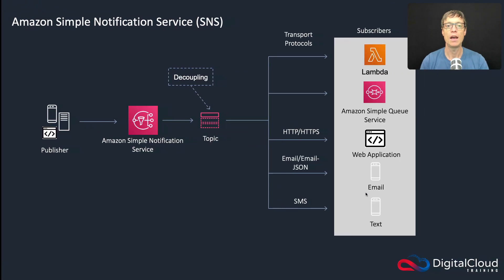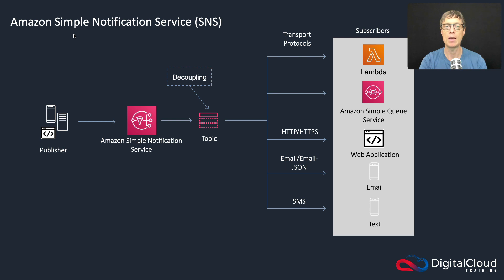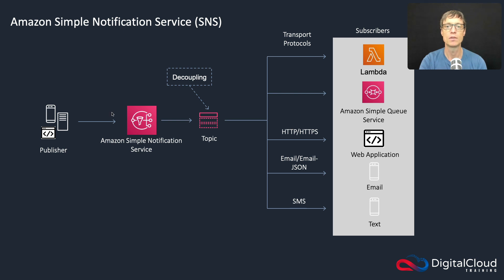Let's head over to the slides. Amazon SNS uses a publisher-subscriber model: a publisher sends a notification and a subscriber receives those notifications. This is a method of decoupling — your publisher can be one application, your subscriber another, and SNS sits in the middle sending information between those components. There are several ways to send messages, including HTTP, email, and SMS, and the subscribers can be various different endpoint types.